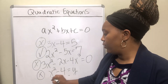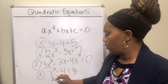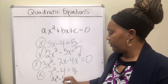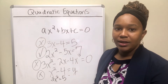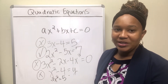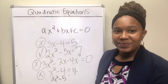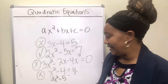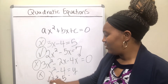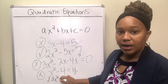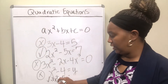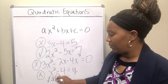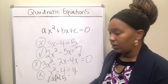Last one: what about 3x squared equal to five? Is that a quadratic equation? Yes, it is. You have one variable, you have an equal sign, and the highest exponent is two — so that makes that a quadratic equation.